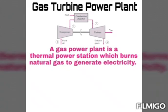Gas power plant is a thermal power station which burns the natural gas to generate electricity. Gas turbine works on the Brayton cycle. Gas turbine burns fuel such as oil — it may be high-grade gasoline used for aircraft application, or natural gas for industrial application, or coal.